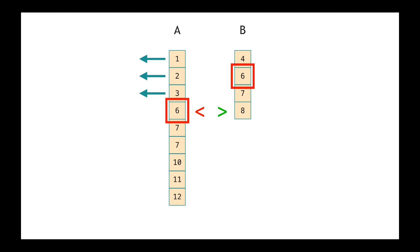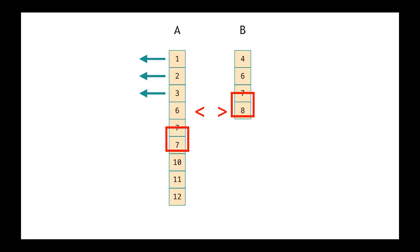Then we are in a situation where the one in A is not lower than the one in B, and the one in B is not lower than the one in A either. In this case we are not concerned with those values because we are looking for elements in A which are not in B — and if the two values are equivalent, we're not concerned with them. So we move down in both collections. 7 is equivalent to 7, so we move down again in both collections.